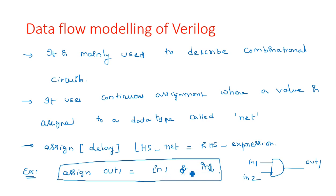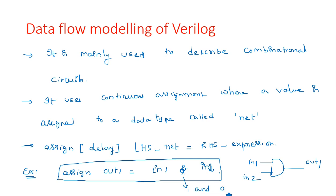In VHDL, all the operators like AND gate, OR gate, NOT gate have been implemented with their direct names — 'and', 'or', 'xor' and so on. But in Verilog we don't have those particular names; we use symbols — ampersand for AND operation, vertical bar for OR operation. That is the key difference in representation compared to VHDL modeling. So data flow modeling is very easy and quite simple compared to the remaining models.